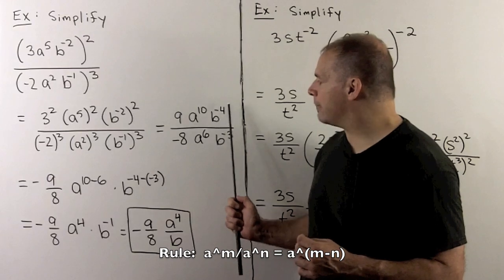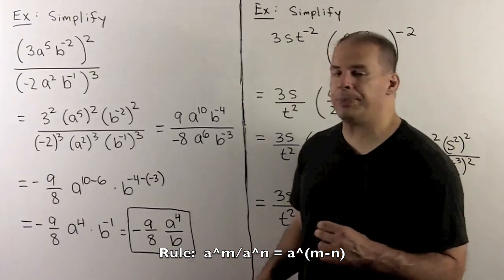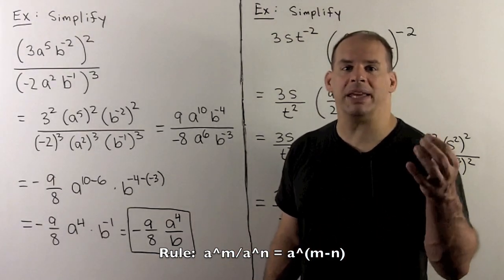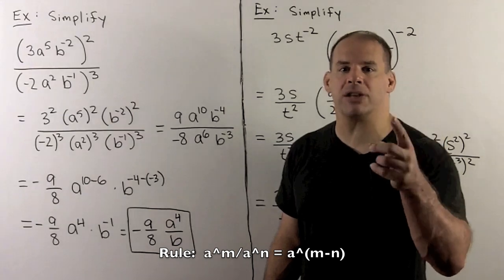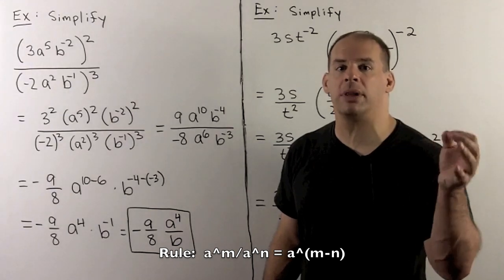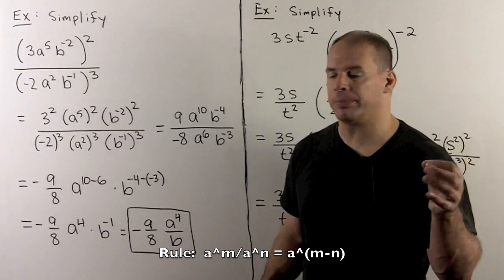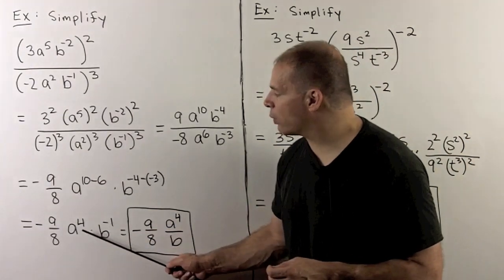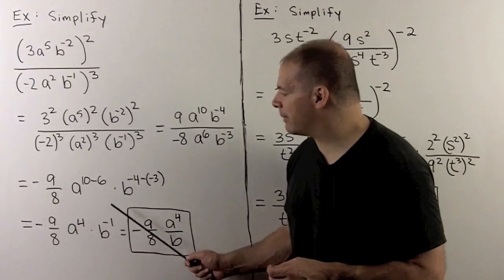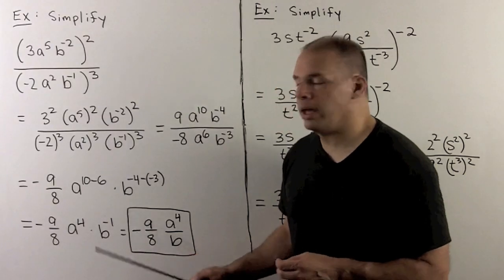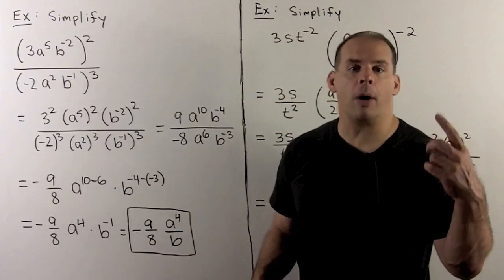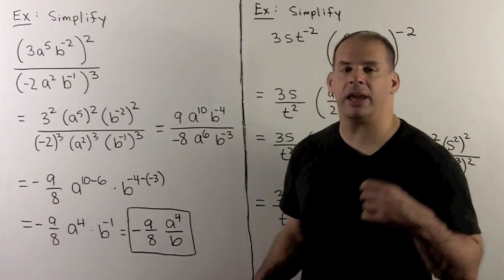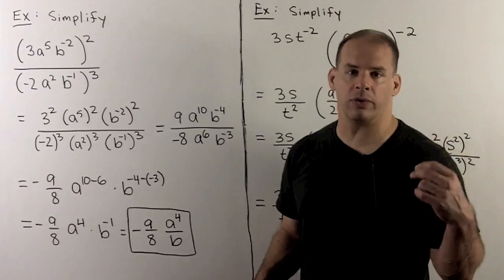For the b terms, b to the minus four over b to the minus three — taking the difference — gives b to the minus four minus negative three, which is b to the minus one. So we have minus nine eighths times a to the fourth times b to the minus one. With all positive exponents, that's minus nine over eight times a to the fourth over b.